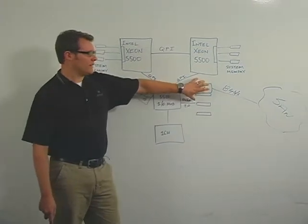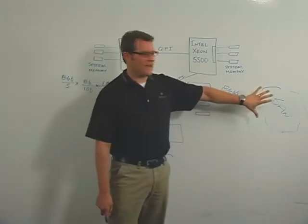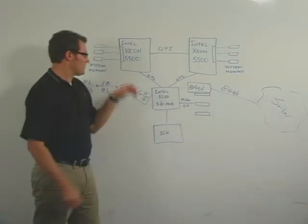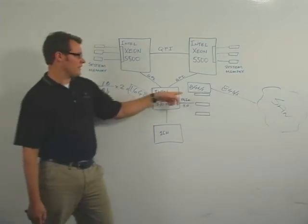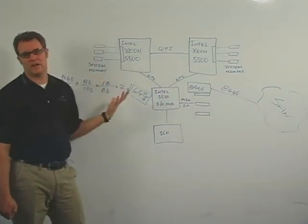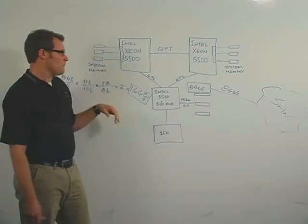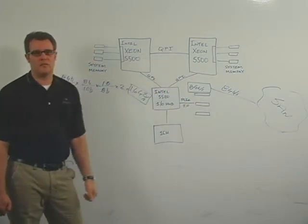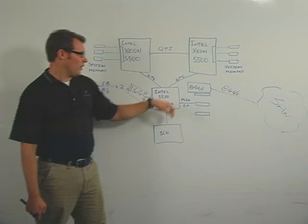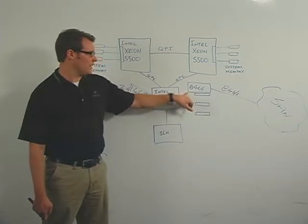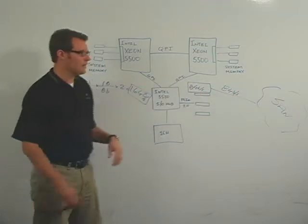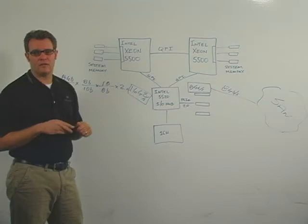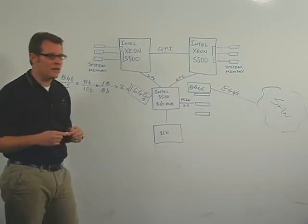So while the Emulex HBA is busy offloading the fiber channel activity out here in the SAN, it's also busy doing DMAs back and forth to the memory to complete IOs. When IOs complete, the HBA has to generate an interrupt to tell the device driver that it's done with the IO. What we've done to increase the efficiency of that is in our 8GB HBA, we've implemented something called Message Signaled Interrupt Extended, or MSIX. And what that allows us to do is it's a different way to send an interrupt.